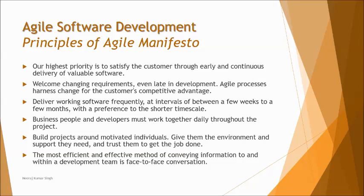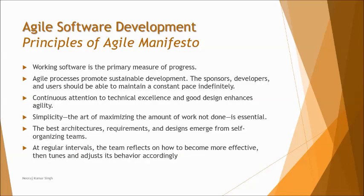Principle five: the most efficient and effective method of conveying information to and within a development team is face-to-face conversation. This is why the development team should be placed at one location under one roof — agile development teams are generally not geographically distributed. Principle six: working software is the primary measure of progress. What is delivered to the client and how much acceptance criteria is met is more important than internal metrics like number of defects found.